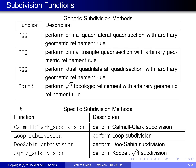Then we have the specific subdivision functions. For example, a function Catmull-Clark subdivision, which performs Catmull-Clark subdivision. Loop subdivision, which performs loop subdivision. Doo-Sabin subdivision, which performs Doo-Sabin subdivision. And then square root 3 subdivision, which performs sqrt-3 subdivision.